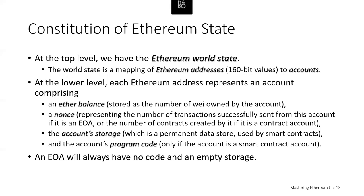Each account also has account storage, which is a permanent data store only used by smart contracts, and the account's program code, again only if the account is a smart contract account. An externally owned account wallet will always have no code and will have an empty storage.